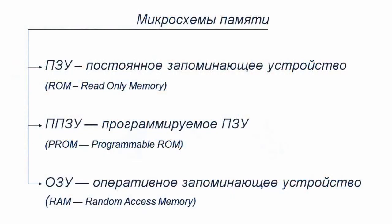Permanent storage — ROM, or read-only memory — is used to record data only once, at the stage of manufacturing the chip. This memory is also referred to as the mask ROM. The data stored in the ROM does not get erased if the power is disconnected, which is why it is sometimes called non-volatile memory.